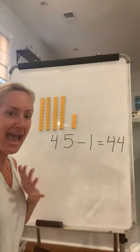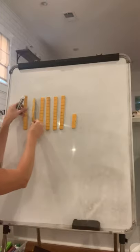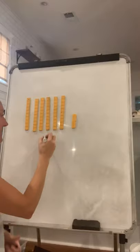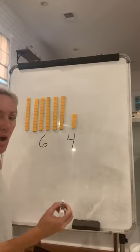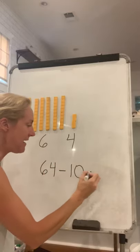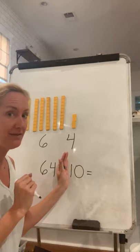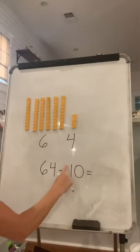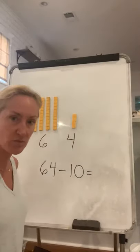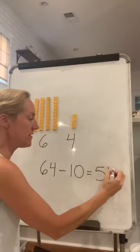I want you guys to practice adding and subtracting ones and tens. Let's try another one with tens. Let's say I have 1, 2, 3, 4, 5, 6 tens — that's equal to 60 — and then 1, 2, 3, 4 ones. So I have 64. What is 64 minus 10? I put a minus — that means we're taking it away. Am I taking away a 1 or am I taking away a 10? Take away one 10. Take away the 10. So now I don't have 6 tens anymore — 1, 2, 3, 4, 5. I took one of them away. So now it's 5 tens and 4 ones. 54.